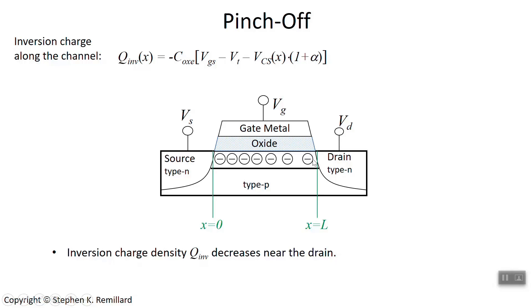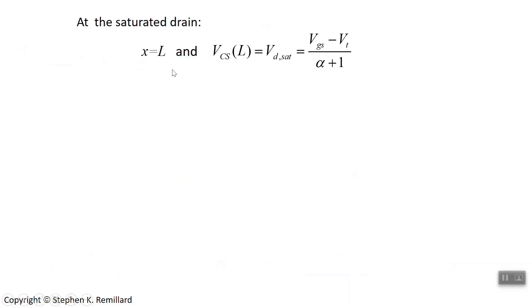the inversion charge actually reaches 0 at the drain. We'll show that momentarily. It's not 0 throughout the channel, so there's always inversion charge throughout the channel, but it gets weaker and weaker, and if you have saturation voltage at the drain, then that charge becomes 0, right at x equals L. Let's take a look at that.